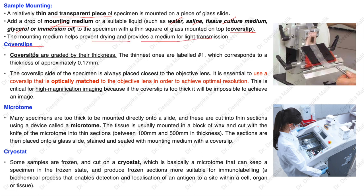Cover slips are graded by thickness; the thinnest are labeled as number one, corresponding to approximately 0.17 mm. The cover slip side of the specimen is always placed closest to the objective lens. It is essential to use a cover slip optimally matched to the objective lens to achieve optimal resolution. This is critical for high-magnification imaging, because if the cover slip is too thick, it will be impossible to achieve a clear image.